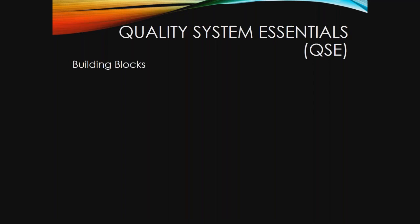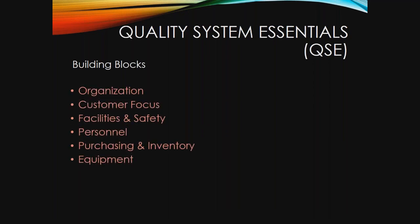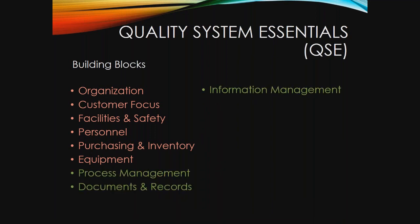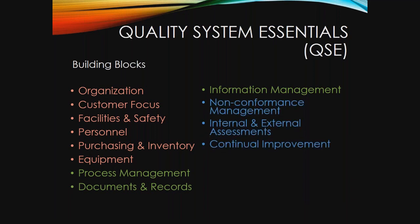Each of the QSEs can be categorized into one of three buckets. The first group makes up the lab bucket: organization, customer focus, facilities and safety, personnel, purchasing and inventory, and equipment — the items necessary for the basic foundation of running a lab. The second group is the work bucket: process management, documents and records, and information management — important for the operational tasks carried out within the lab. The last group makes up the measurement bucket: these are the items essential in measuring the department's success and make up what quality monitoring is often discussed as.